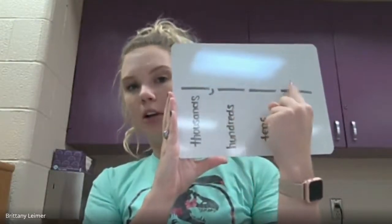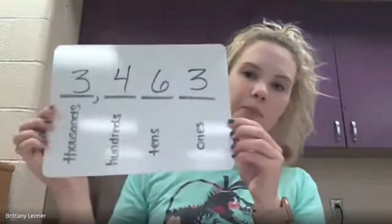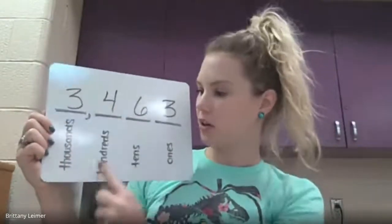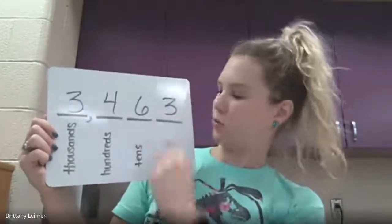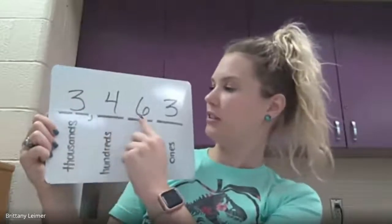Each one of these spaces is where you put a number or a digit. So if I put the number 3,463, my three is in the thousands place. I have a four in the hundreds place, a six in the tens place, and a three in the ones place. My number is 3,463.